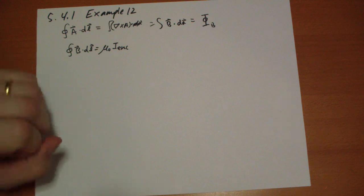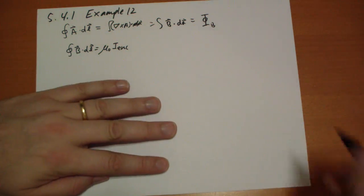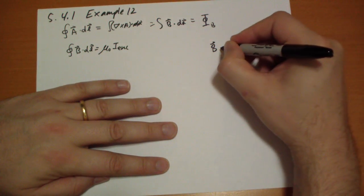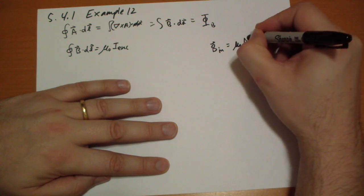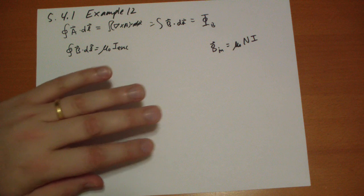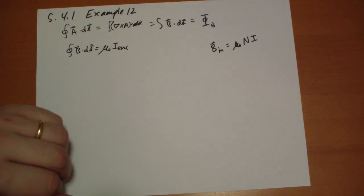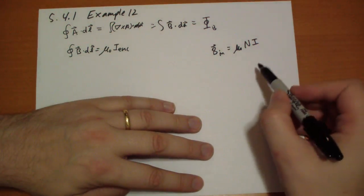Well, an infinite solenoid with n turns per unit length current i has a magnetic field on the inside of mu-naught n i. That's all it is. It's pretty simple. And so what is the magnetic flux through a certain surface? Well, let's do this.